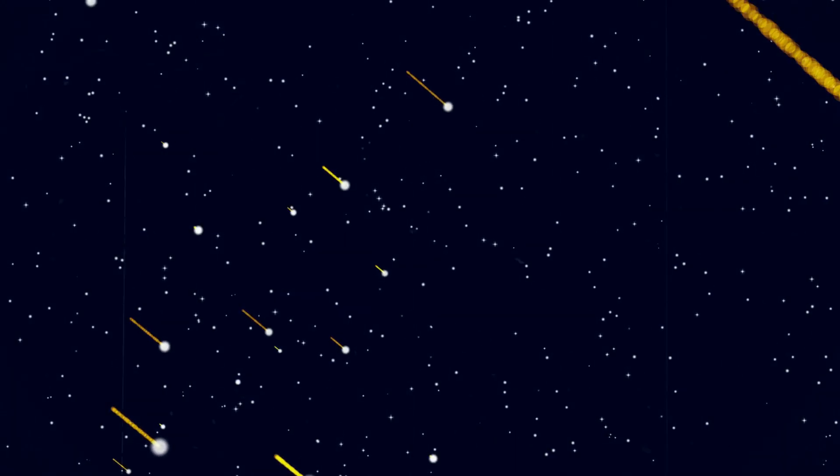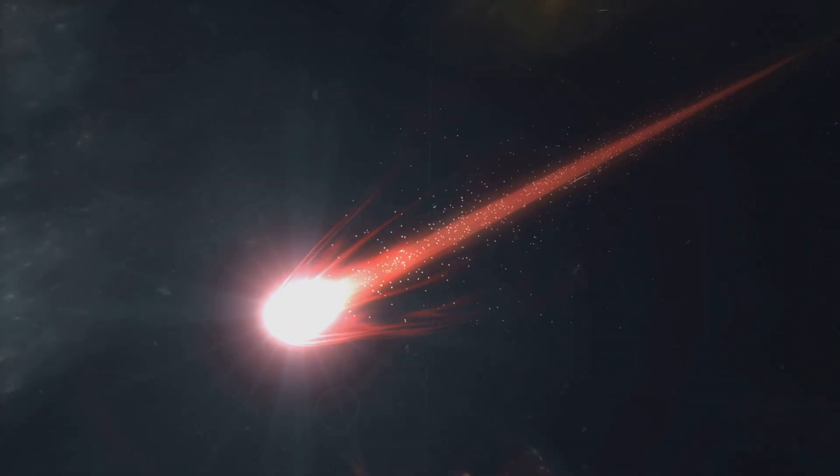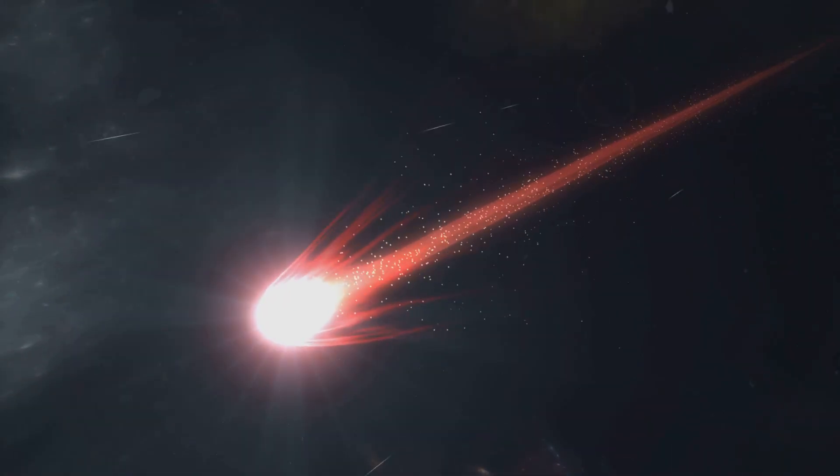Could multiple plasma streams arriving at once amplify each other? Could their interaction with the heliospheric current sheet, the giant rotating electrical surface wrapped around the solar system, feed back into solar storms?